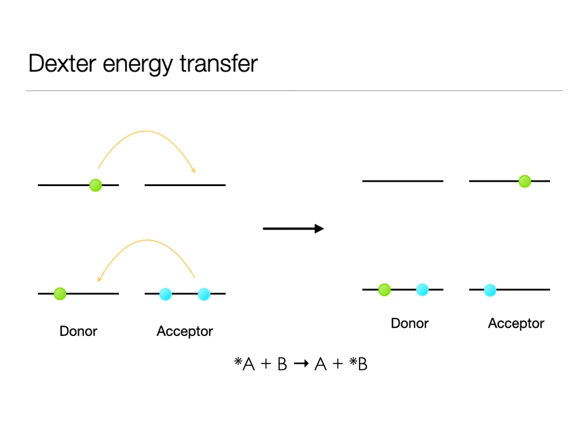And because this mechanism actually involves physically moving electrons around, it occurs at much lower distance to what we would see with Förster. Typically, I'll only see this at distances below 20 angstroms.